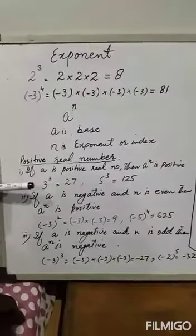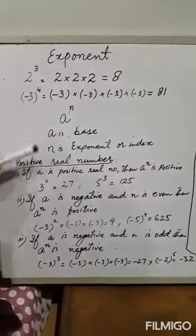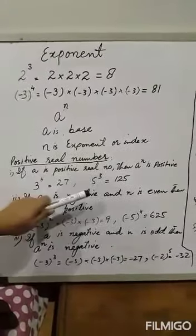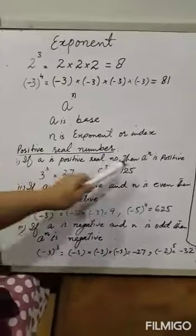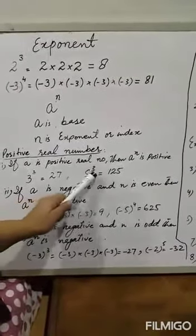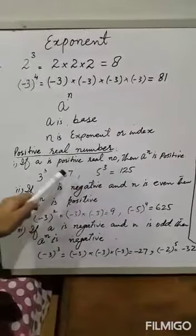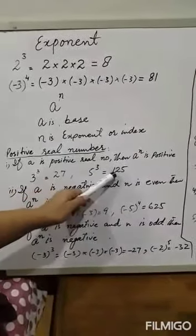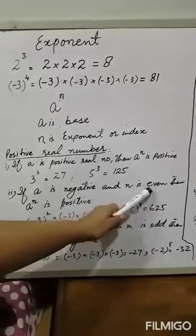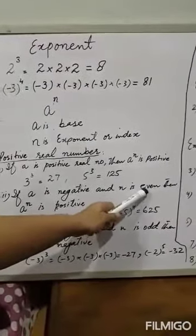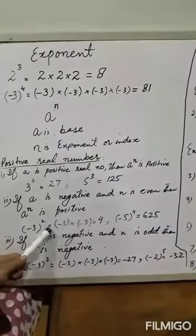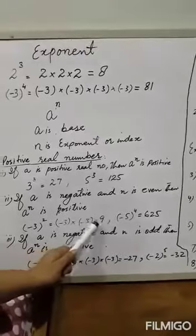The exponent or index can be positive or negative. If the base is positive, then the result is always positive regardless of the power. If A is a positive real number, then A raised to the power N is positive. For example, 3 cubed equals 27, and 5 cubed equals 125 — a positive base always gives a positive result.